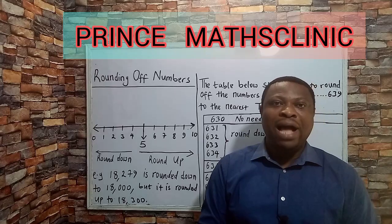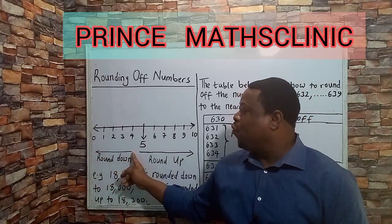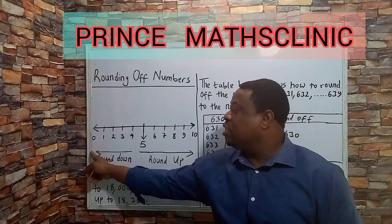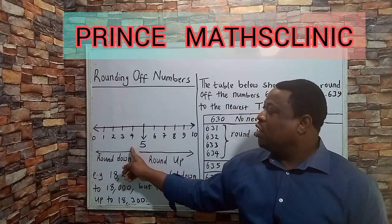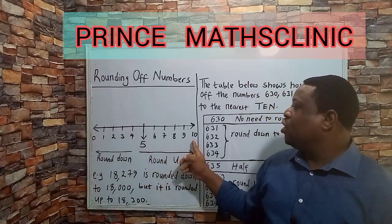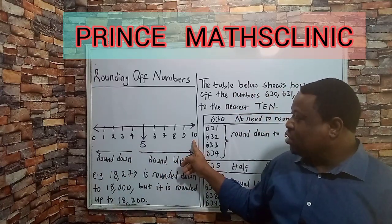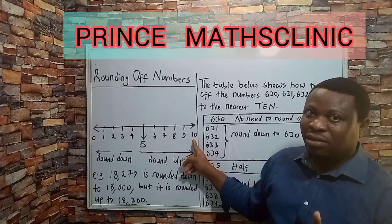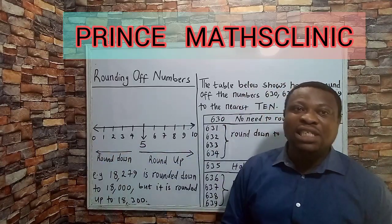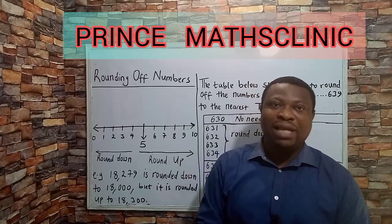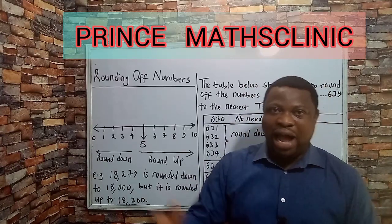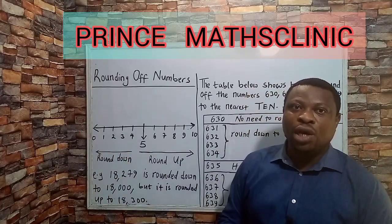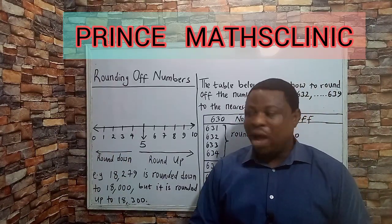We round down numbers when they are between 0 to 4 — anything between 0 to 4, we call it 0, because 4 is closer to 0 than it is to 9. So in rounding off numbers, only two numbers exist: 0 and 1. Any number closer to 0, we call it 0, while any number closer to 1, we call it 1.